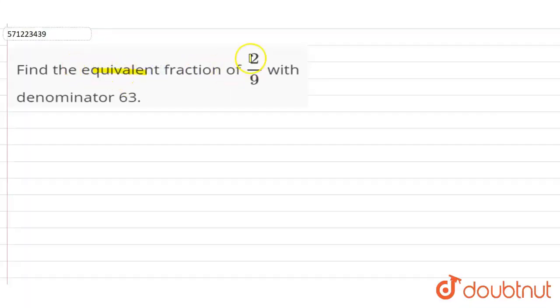Hi students, in this question we have to find the equivalent fraction of 2 by 9 with denominator 63. So we are given the fraction is 2 by 9 and we have to make the denominator equal to 63.